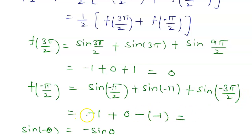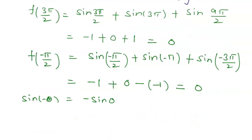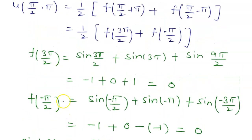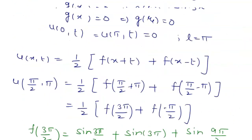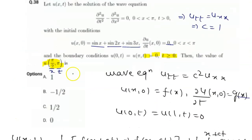This gives +1 and −1 which equals 0. So u(π/2, π) = (1/2)[0 + 0] = 0. Comparing from the options, option D is the correct answer.